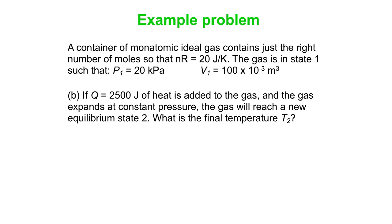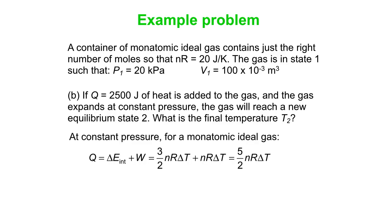Now, what else do we do? We're going to add 2500 joules of heat to the gas. The gas expands, it reaches a new state, and it expands at constant pressure. What's the final temperature? At constant pressure, we know that we can apply the Q is changed internal energy plus W equation. We can use 3/2 nR∆T for a monatomic ideal gas changed internal energy expression, even though we're doing constant pressure. That applies all the time.